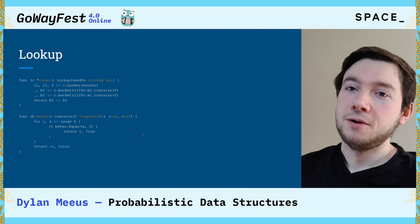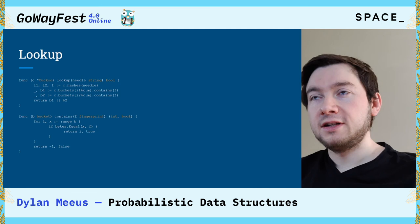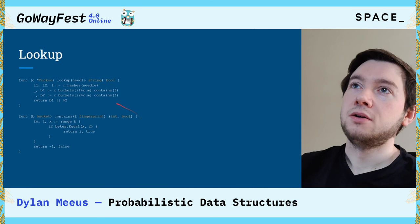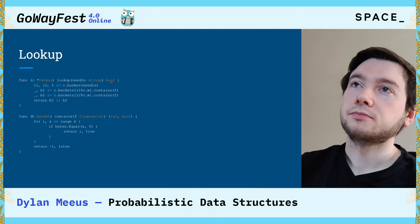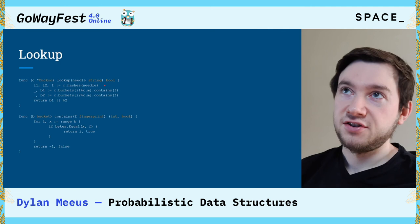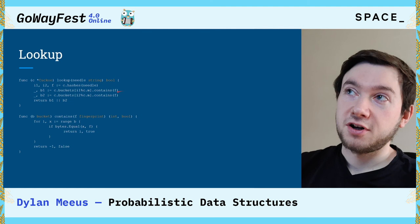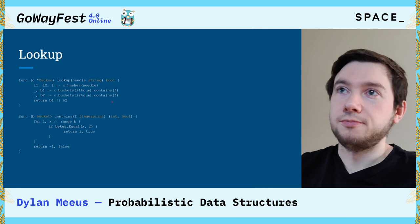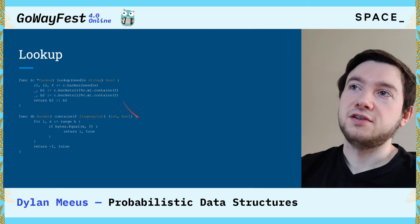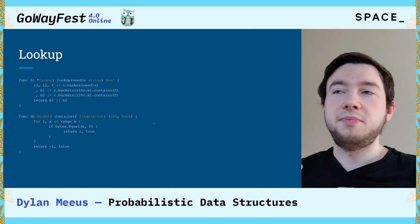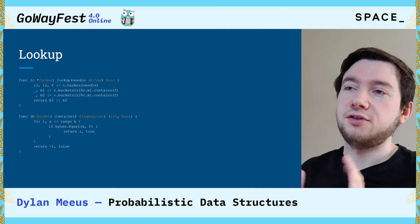Once the insert algorithm is in place, lookup is a relatively lightweight operation — no shuffling needed. For a username called needle, we find the three values again — the two hashes and the fingerprint — and ask whether the first bucket contains our fingerprint or the second. If so, we return true. The contains function iterates over all elements in the bucket and compares with our fingerprint, returning true if found and false if not.